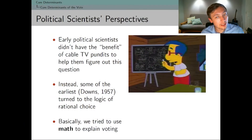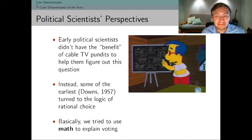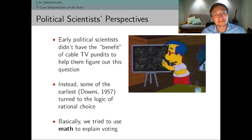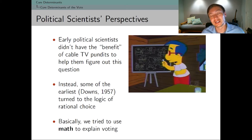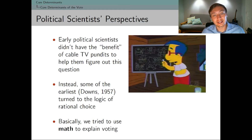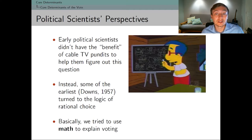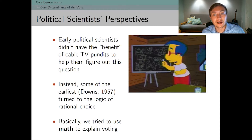I've got Millhouse here on the board to introduce us to some of the early political scientists' perspectives about voting. They certainly didn't have the benefit of cable TV pundits with moving screens to tell them about electoral votes in different states — instead, what they had was math. Some of the earliest approaches to understanding voting in a systematic, social scientific way can be traced to the rational choice perspective — that's maybe the first perspective to think about from the course material.